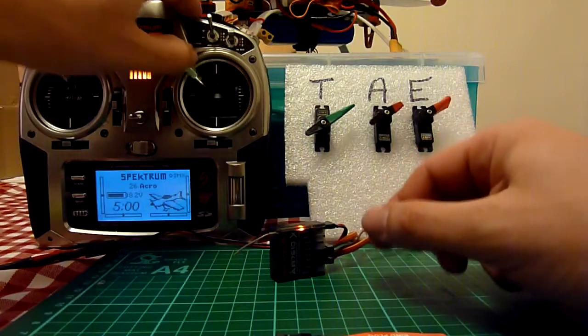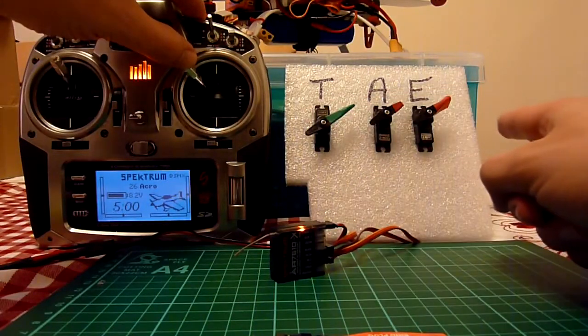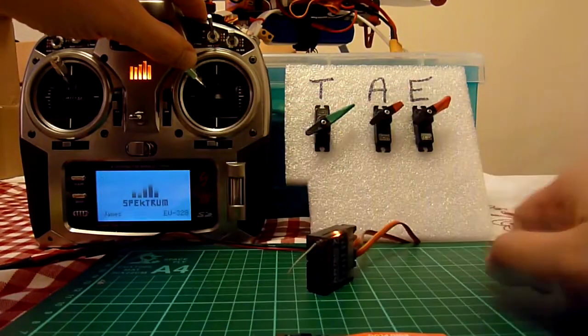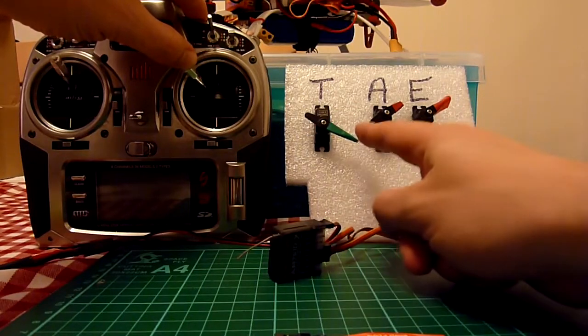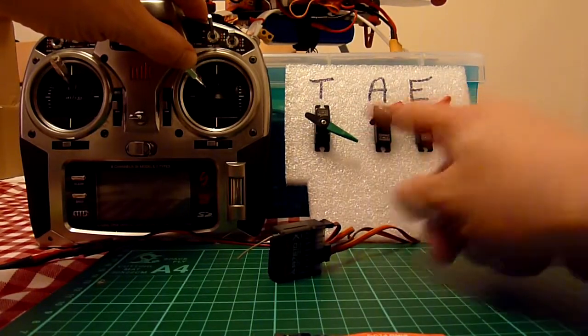Now if I hold the stick up so I've got all my sticks up, if I turn off the transmitter when it goes into fail safe, throttle goes to low but these two are holding their last position.